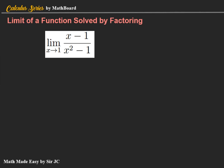Let's take a look at this first example: the limit of x minus 1 over x squared minus 1 as x approaches 1. When you replace x by 1, the numerator is 1 minus 1, which is 0, and the denominator is 1 squared minus 1, also 0. So the result is indeterminate.